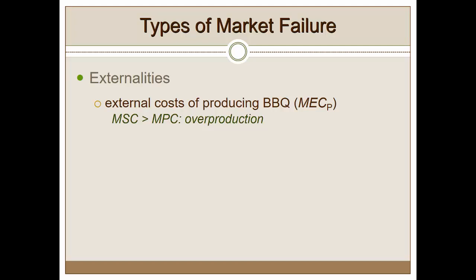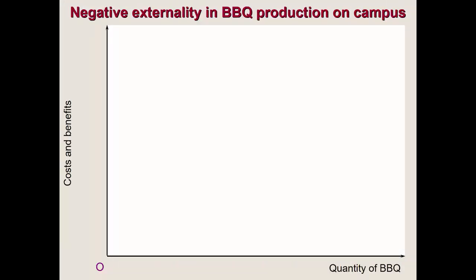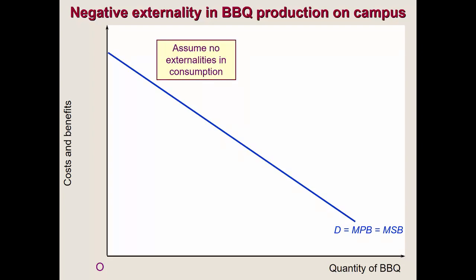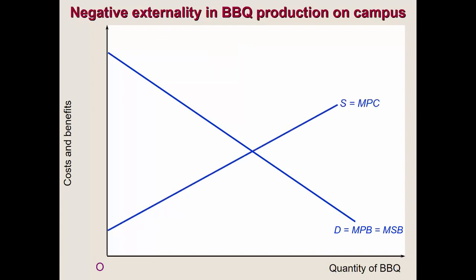Let's look at four equilibrium conditions with the presence of externalities in the production process, and how inefficient it would be if we don't incorporate externalities into prices or cost calculations. The first case is that the marginal social cost of producing barbecue is greater than the marginal private cost — in other words, we are over-producing. We need to reduce output if we take into account the external costs of barbecue. Let's assume there are no externalities in consumption, so the demand curve is just the marginal private benefit, which also equals marginal social benefit.